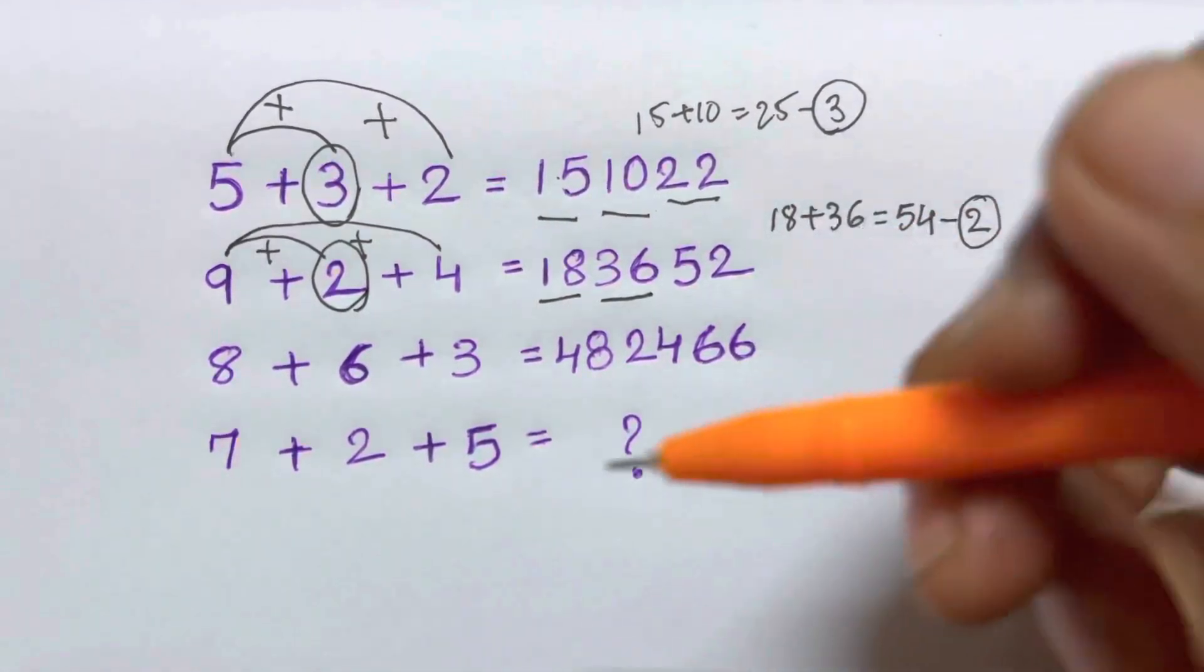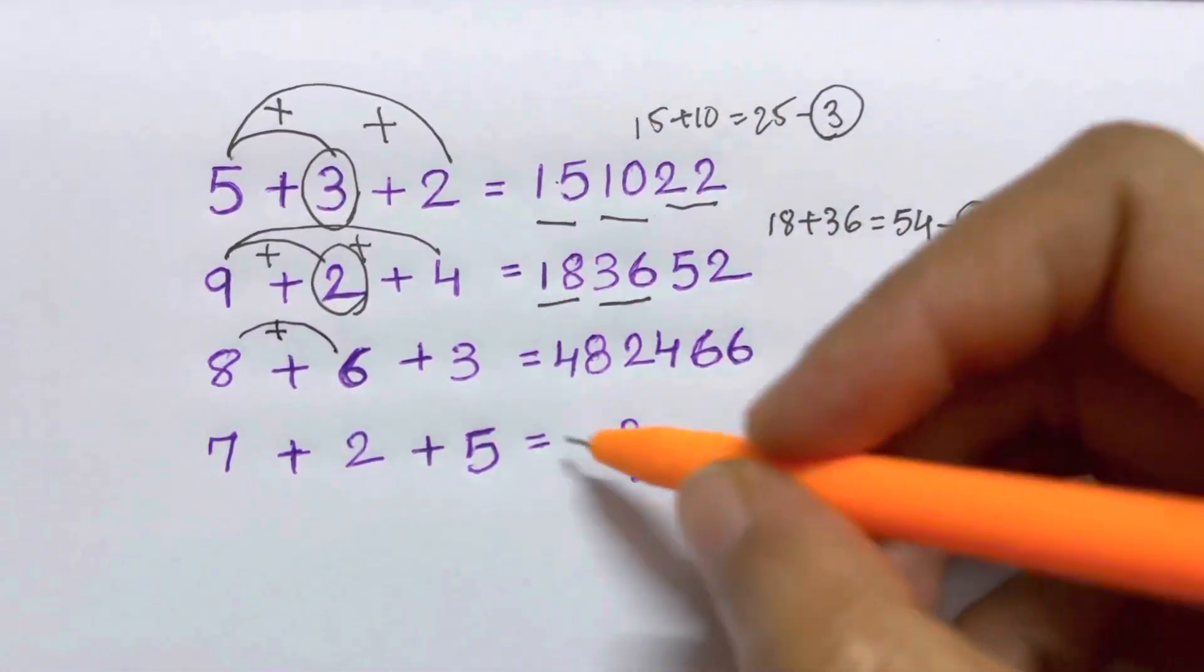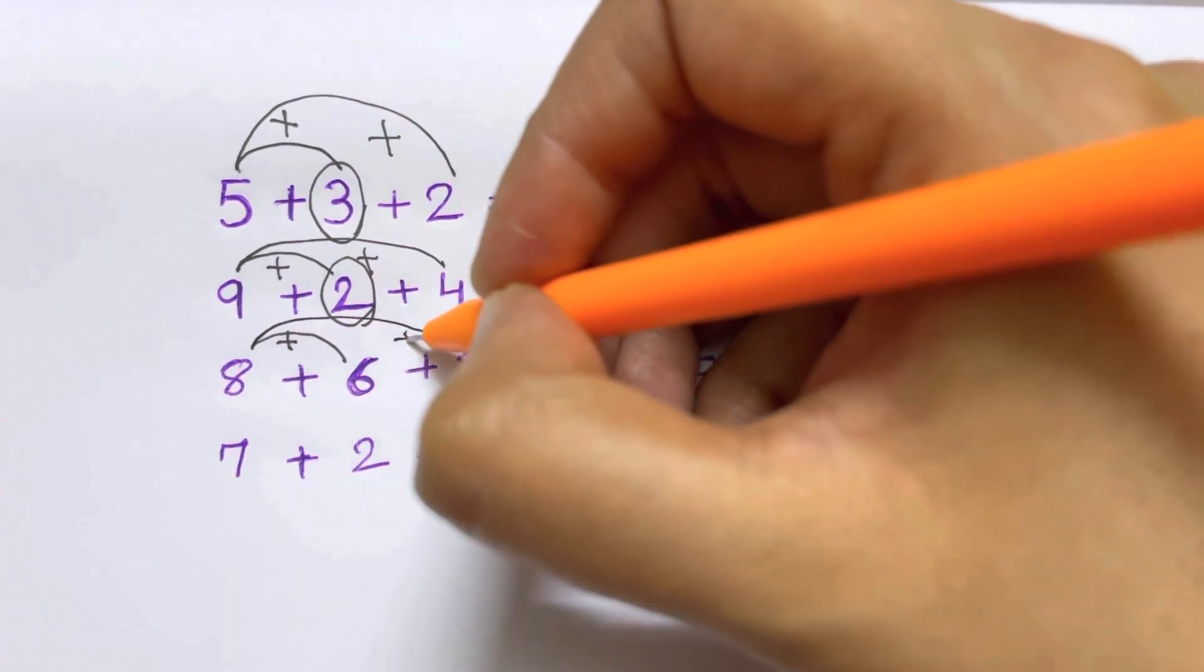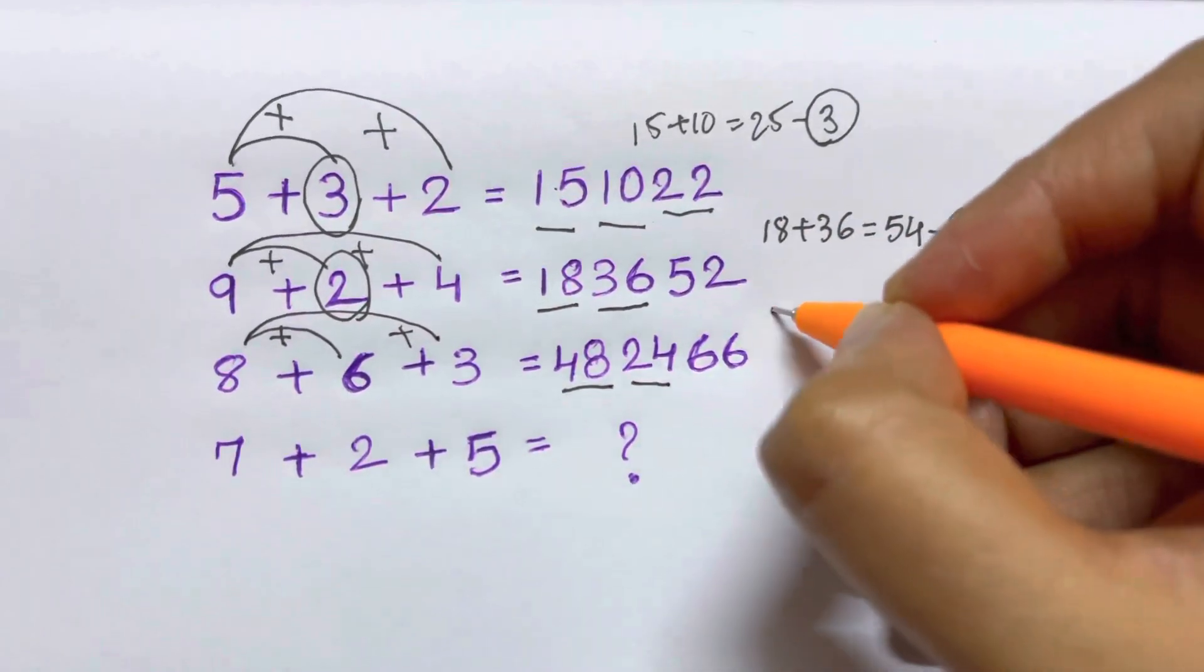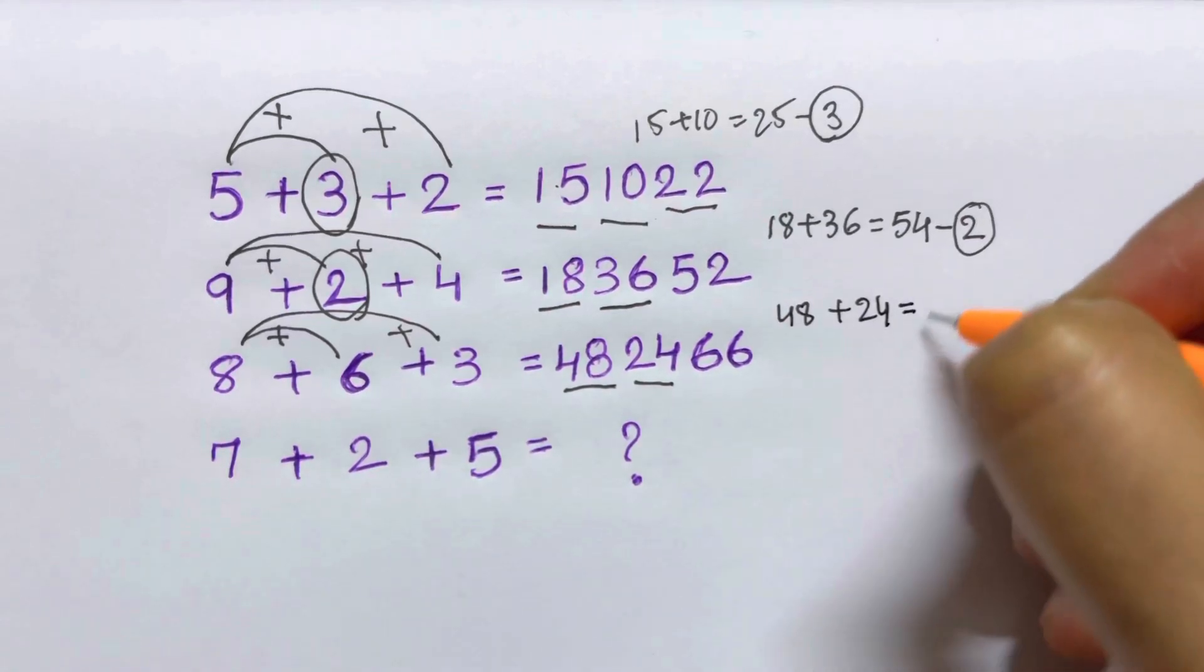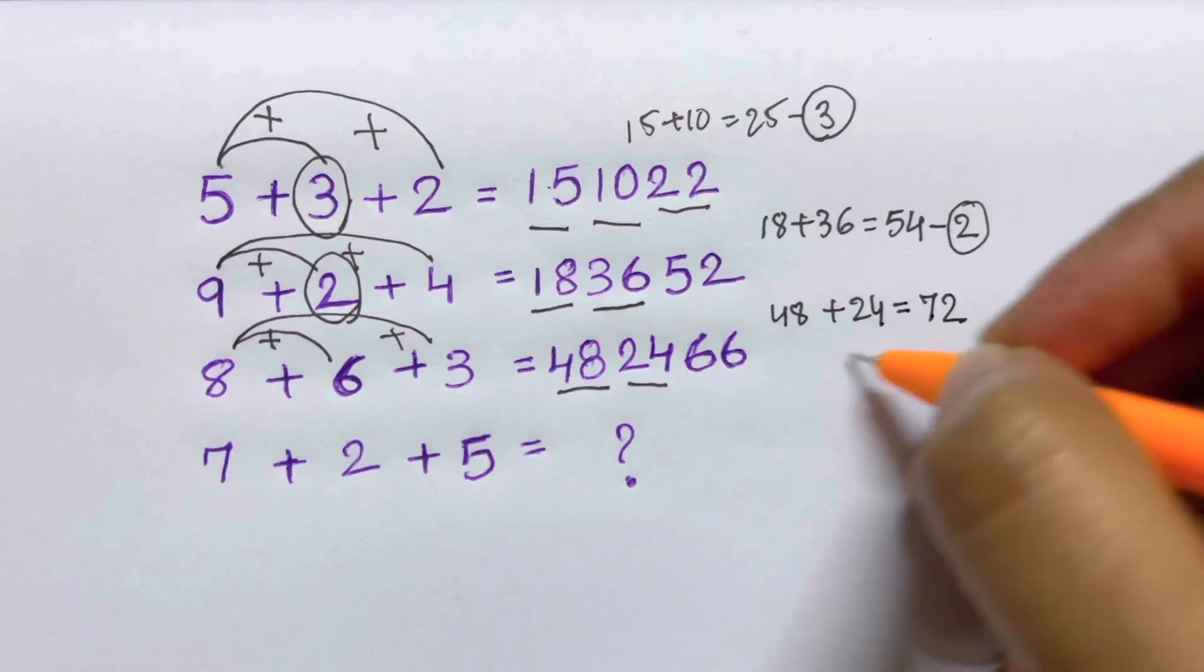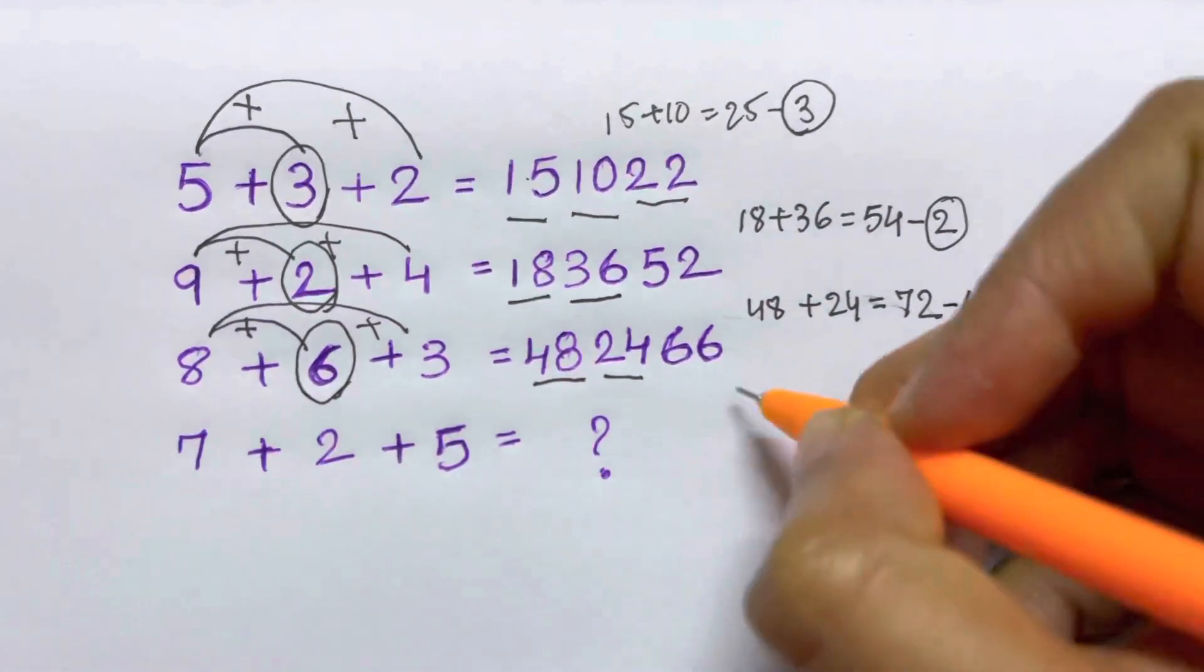So now let's see if this logic applies for the third one as well. 8 times 6 is 48, yes. Then 8 times 3 is 24, yes. And now we are going to add 48+24, that is just going to give you 72. And 72 minus how much will give you 66? That's just subtracting 6. 72-6 will give you 66.